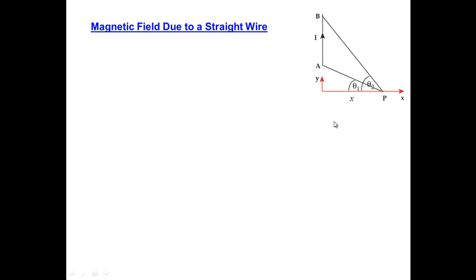There are several important shapes of current-carrying wires that we want to know the results for. One of those is the magnetic field due to a straight wire. Your textbook does the derivation of this result starting with the Biot-Savart Law. I'd like to just remind you what the result is, and then use these results to work out the magnetic field for combinations of currents we might see in practice.